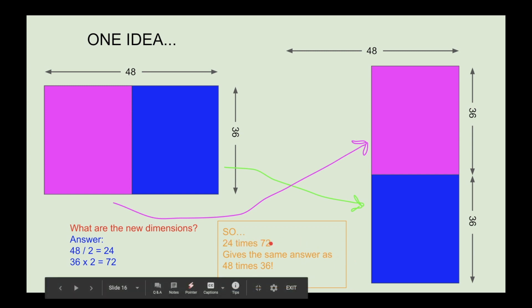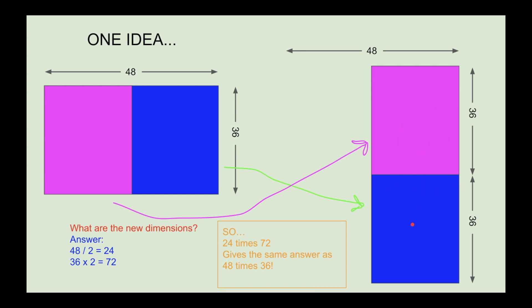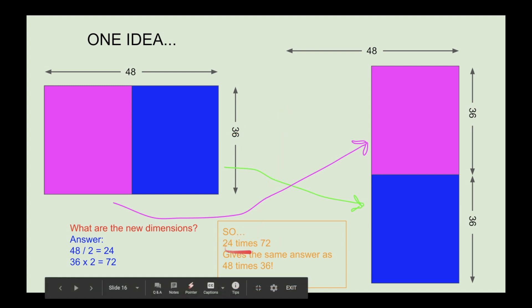The conclusion is that if you do 24 times 72, you get the same answer as if you do 48 times 36. The area of a 24 by 72 rectangle is the same as the area of a 48 by 36 rectangle. And you don't even need to know what the area is—you don't even need to know the answer to either of these multiplications, but you can say for sure that they give the same answer, whatever it is.